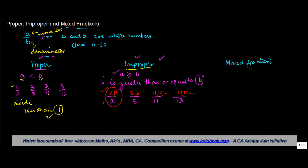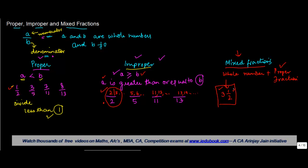In an improper fraction, the value of the numerator A is either greater than or equal to its denominator B. Now, in a mixed fraction there are two components — the word 'mixed' itself indicates there has to be more than one. In a mixed fraction, you always have a whole number plus a proper fraction. For example, take the whole number 3 and write a proper fraction like 1 by 2 with it.